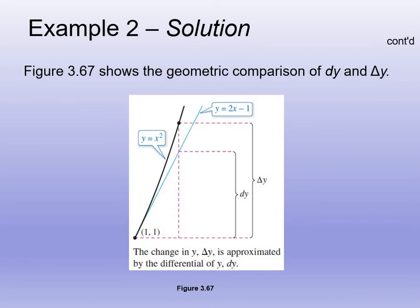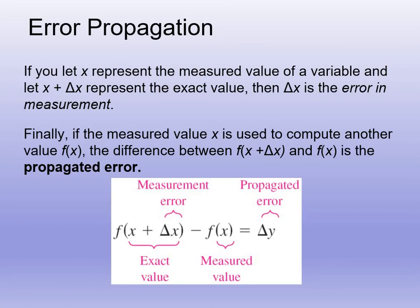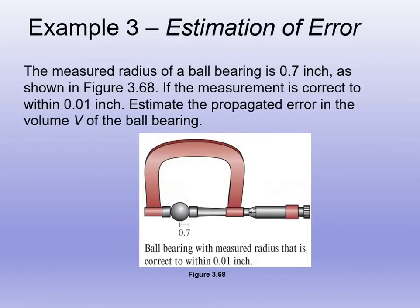Delta y is the actual change of the function, while dy is the change compared to the tangent line — that's where the small difference comes from. There is a small amount of error: f(x + Δx) − f(x) gives the actual measured value, and that difference is our propagated error — our small delta y value, similar to the delta-epsilon approximation from earlier.